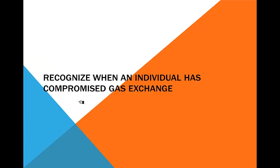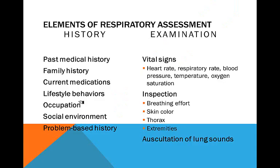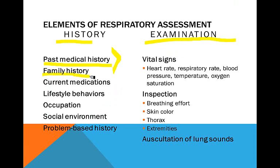How do you recognize when an individual has compromised gas exchange? Start with their history and then move through their examination. Look at their past medical history — how often are they coming in for anything respiratory-related? Do they have a family history of multiple sclerosis, lupus, COPD, or asbestos exposure? What are their current medications — anything that could contribute to developing, for example, interstitial cystitis, like amiodarone?